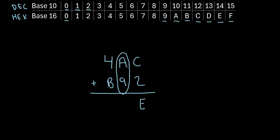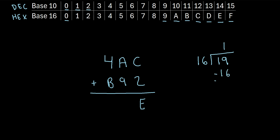Now we'll move on to the next column. We have A plus 9. A is the same as 10, so really what we have is 10 plus 9, that's 19. Notice there's no 19 represented in the hexadecimal system. So we say how many 16s go into 19? That would just be 1. So 16 times 1 is 16. Then 19 minus 16 is 3, so 3 is our remainder. So 19 divided by 16 is 1 with a remainder of 3.